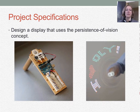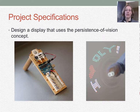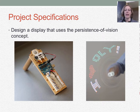Here are the specifications for the project. You're going to be designing a display that uses the persistence of vision concept in order to write a message or draw a picture. We're going to use eight red, green, blue LEDs — these are LEDs that have all three colors inside them and look like one LED. When we rotate the system, the lights should flash to display an image that can be read or viewed.